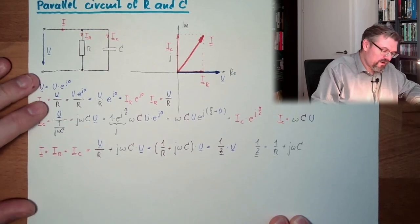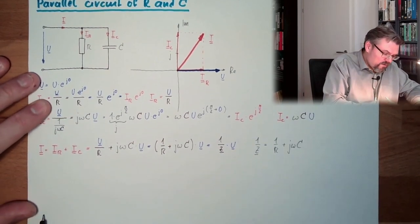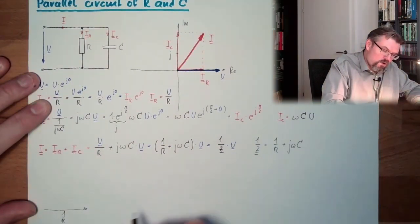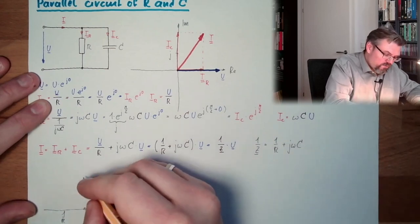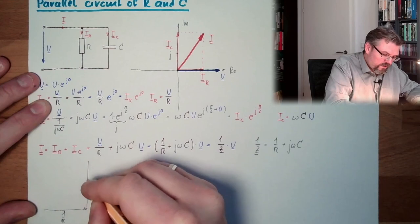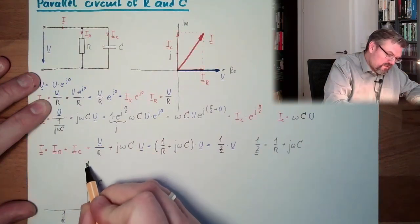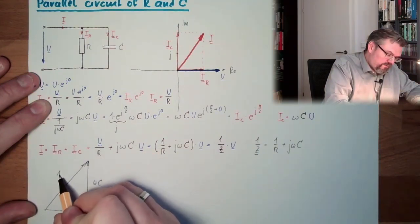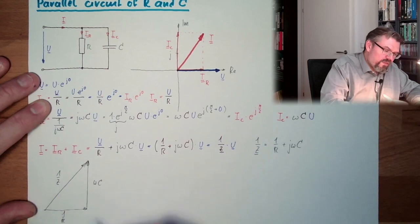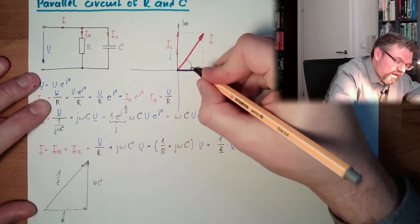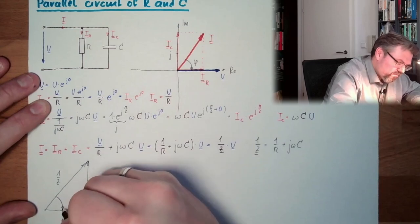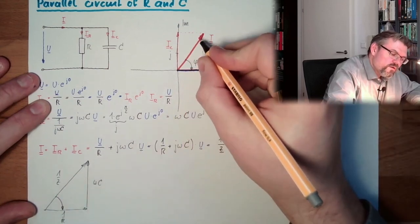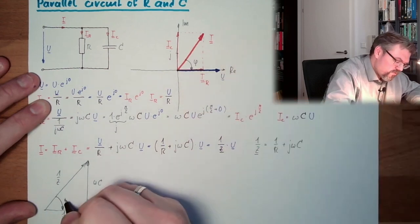Now we have a real part. Here we have a complex part, ωC, an imaginary part, ωC positive going here. And this here is 1 divided by Z. And here we have again the phase angle phi. It's negative in this case because it's going from current to voltage phi.